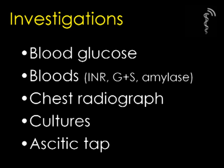Investigations may include a blood glucose, as blood glucose levels can rise or fall in hepatic disease, the liver being one of the main stores of glycogen in the body. Blood tests including an INR, group and save, and amylase. A chest X-ray. Cultures — both sputum, blood, urine, and ascitic fluid if possible. An ascitic tap must be performed for these cultures, and the cell count can be gauged.